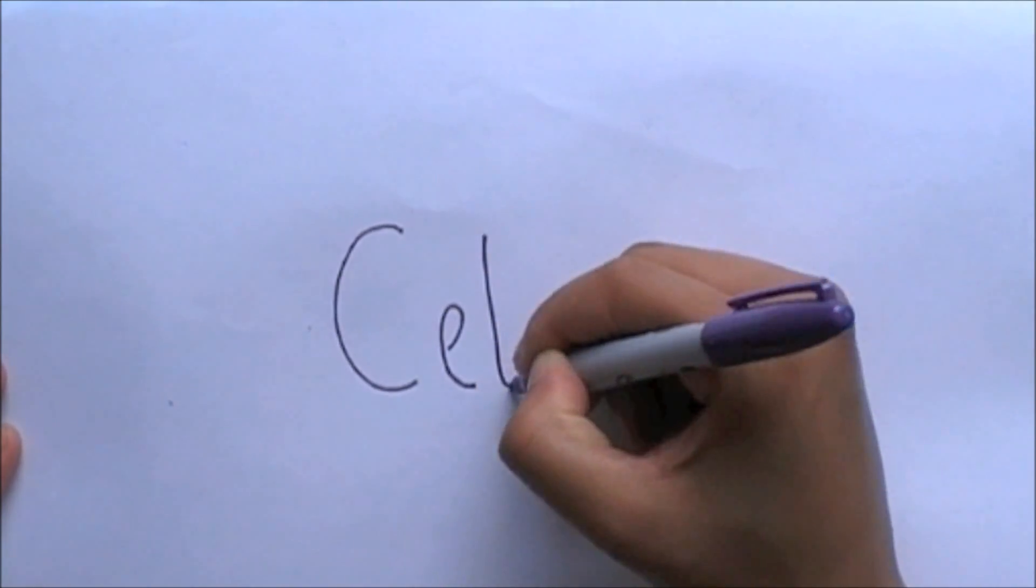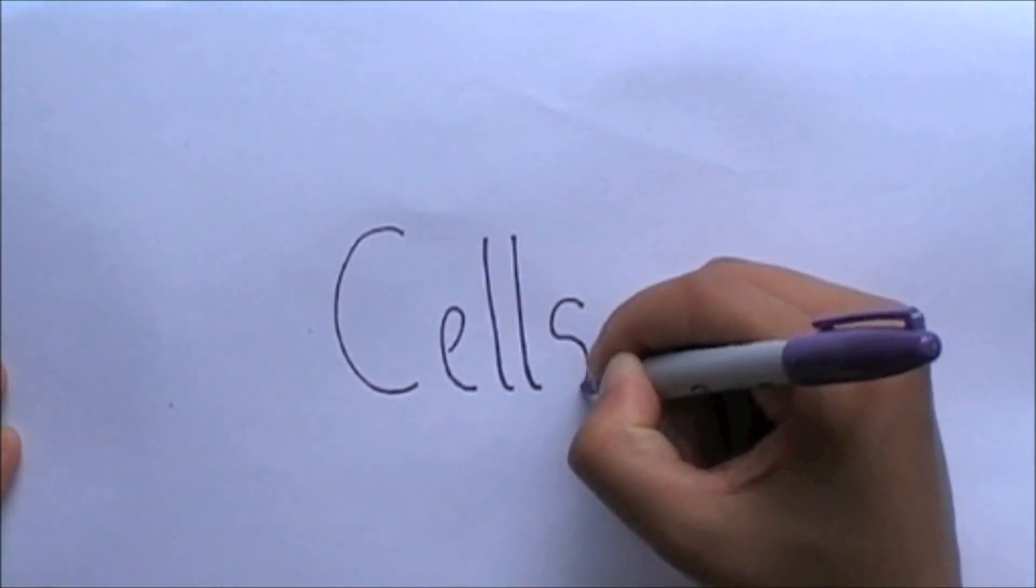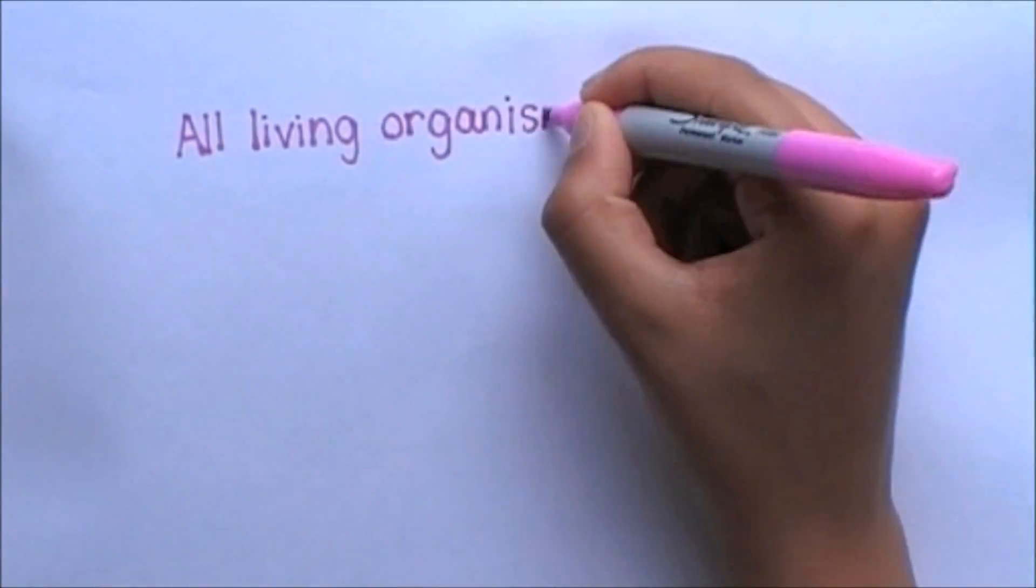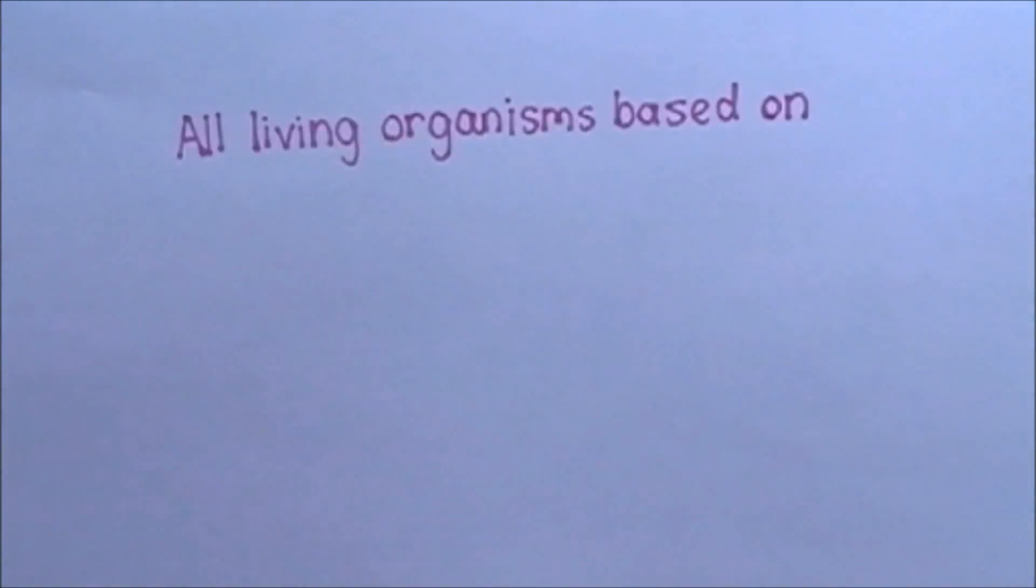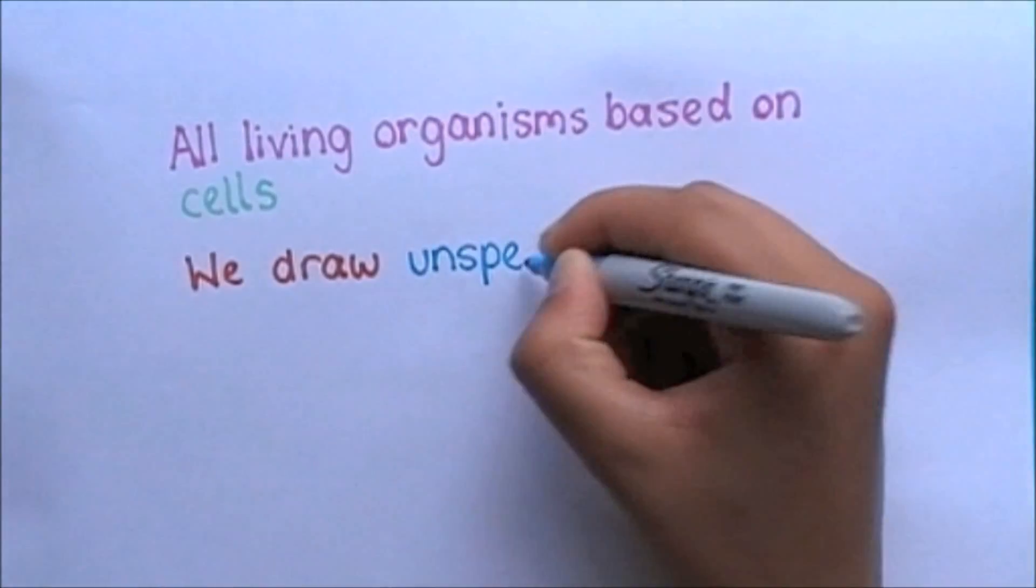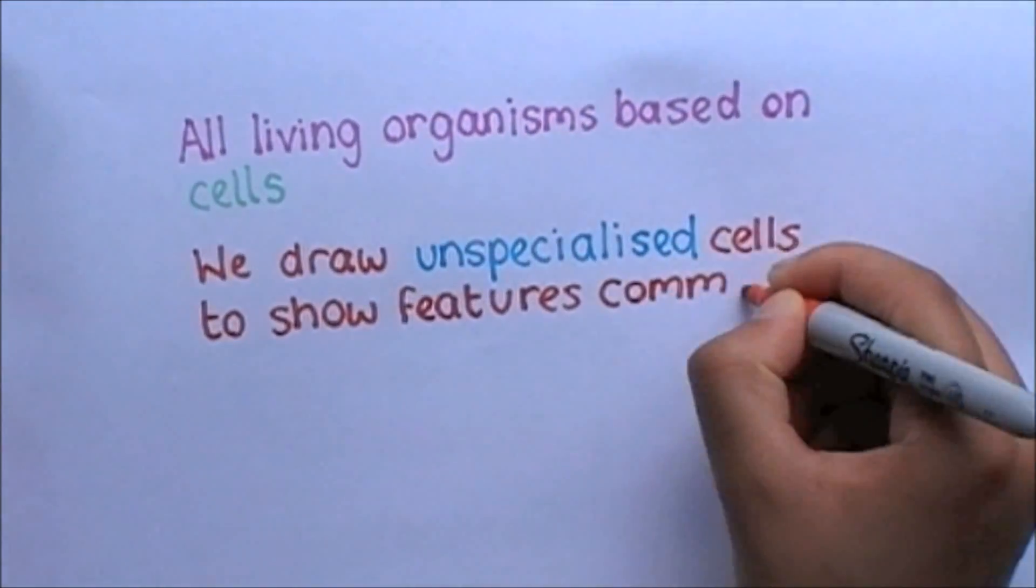Hi, today I will be showing you the simple guide to cells with GCSE biology. All living organisms are based on units which are called cells. In biology we often draw unspecialized cells to show the features that are common to most cells.